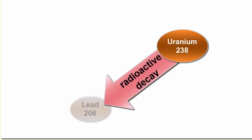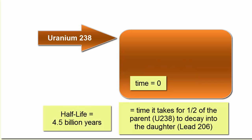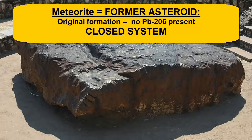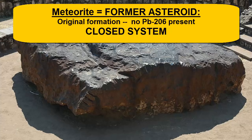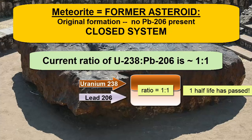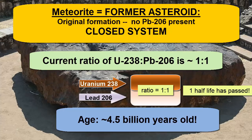The only way to produce lead-206 is as a radioactive decay daughter product of uranium-238. Every 4.5 billion years, one half of uranium-238 will decay into lead-206. So if we open a closed system asteroid that formed 4.6 billion years ago — with no lead-206 at that time and no loss or gain from or to the outside world since — we can use the ratio of the parent and daughter within to determine how long decay has been happening, or how old the meteorite is. We find almost exactly equal amounts of uranium-238 to lead-206. That ratio of 1 to 1 is possible only if exactly one half-life has passed, meaning the meteorite formed about 4.5 billion years ago.